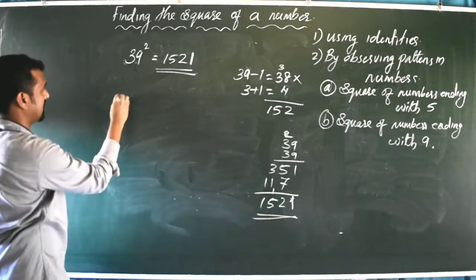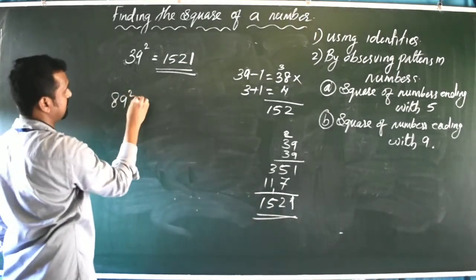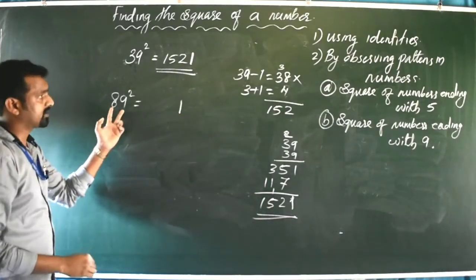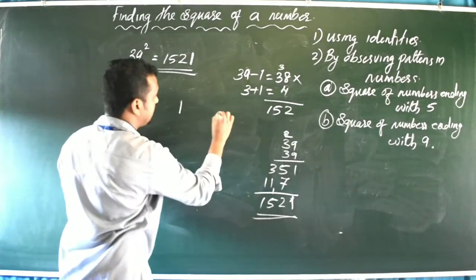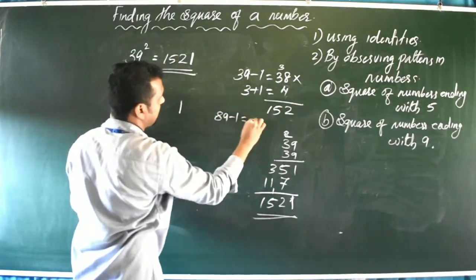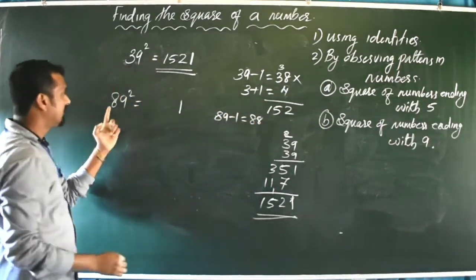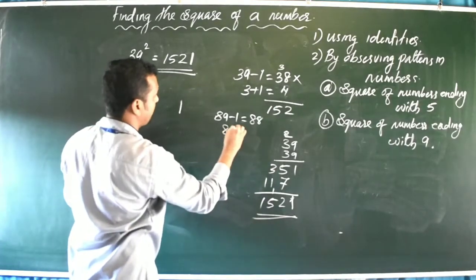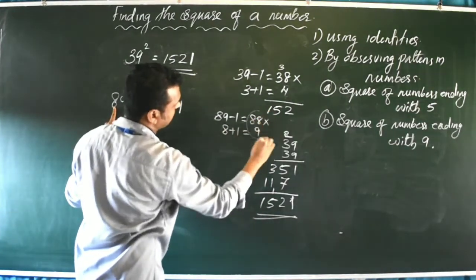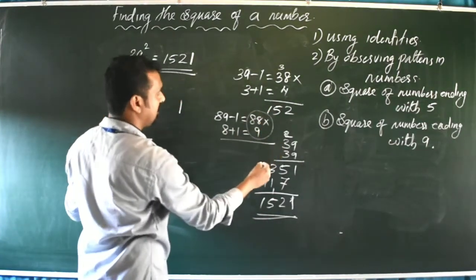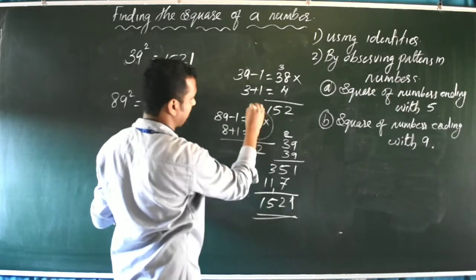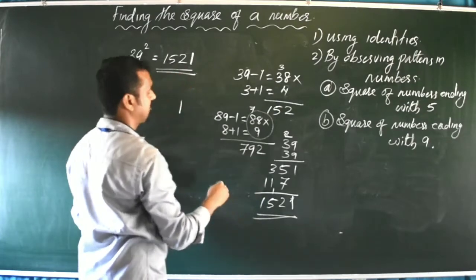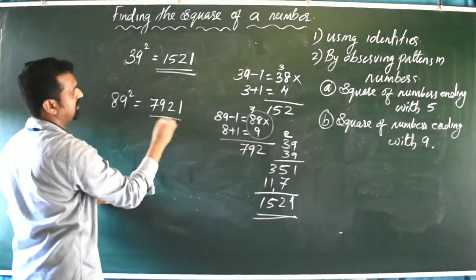One more example: 89². Write 1 as the last digit. Subtract 1: 89 - 1 = 88. Add 1 to first digit: 8 + 1 = 9. Multiply 88 × 9 = 792. So 89² = 7921.